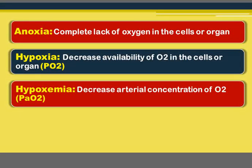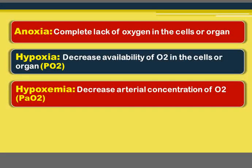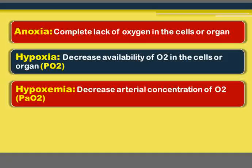Sometimes we use the term hypoxemia, which refers to decreased arterial concentration of O2 rather than at the tissue, cell, or organ level. This is the difference between hypoxia and hypoxemia. However, hypoxemia will lead to hypoxia, because the end result of decreased arterial concentration is decreased availability of oxygen in the cells or organs.